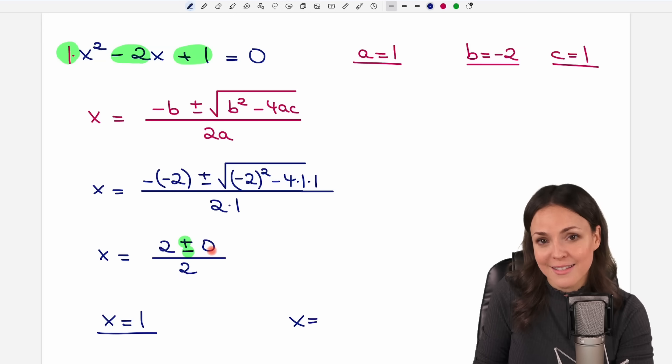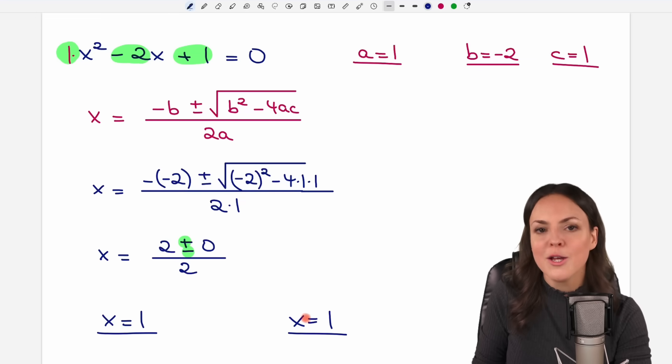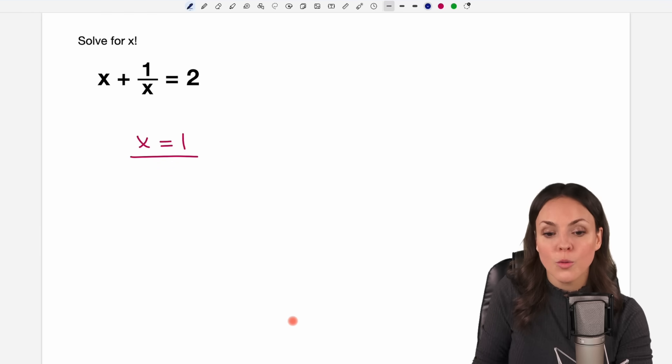We have 2 minus 0 equals 2 as well. And we divide this by 2. So 2 over 2 equals 1 as well. So these numbers are not different this time. They're the same but it's fine. We only have one solution x equals 1.